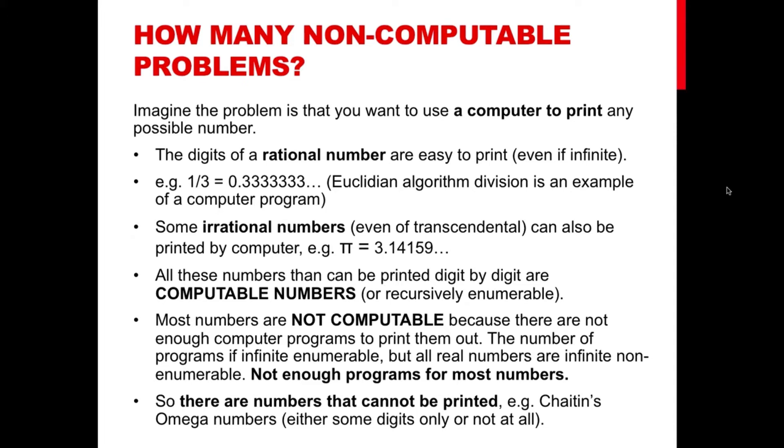Unlike rational numbers, irrational numbers cannot be described as a fraction of integer numbers. Examples are the square root of 2 or the mathematical constant pi, that have the characteristic to have no periodic decimal expansion. Yet some of them, such as pi, can still be calculated digit by digit by a computer using one of the many short formulas to generate the digits of pi.